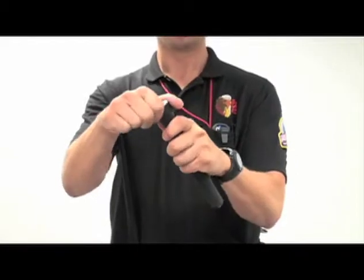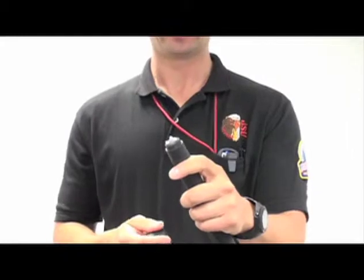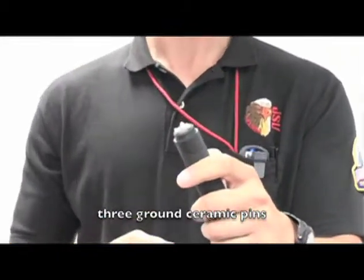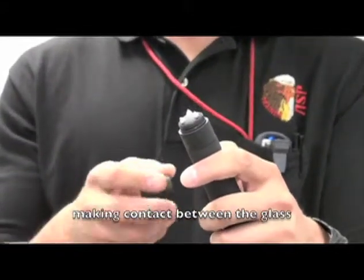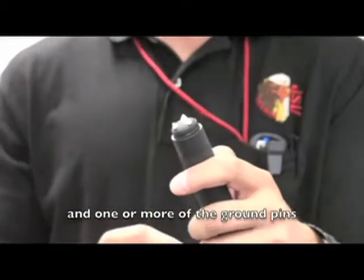To use the breakaway cap, you remove the original end cap that you have placed over it. This exposes three ground ceramic pins that are installed in a geometric dome shape. This allows the greatest chance of making contact between the glass and one or more of the ground pins.